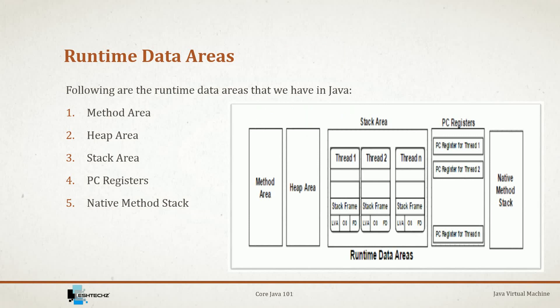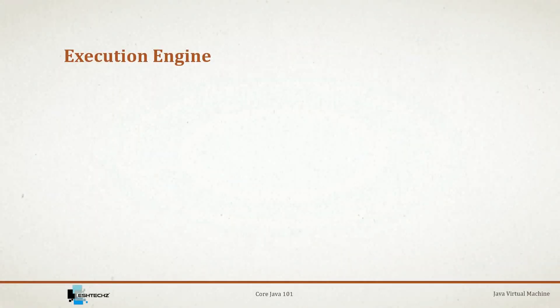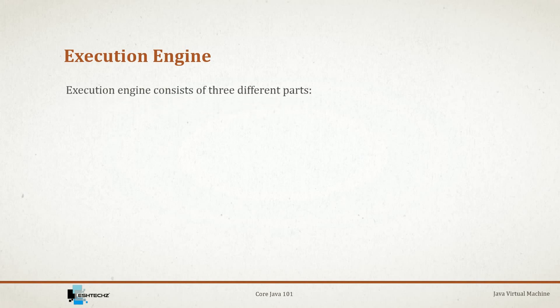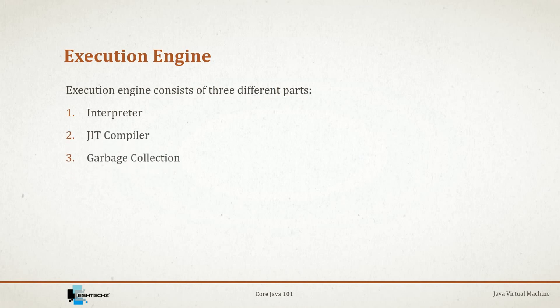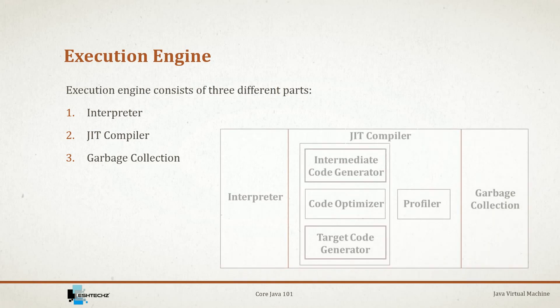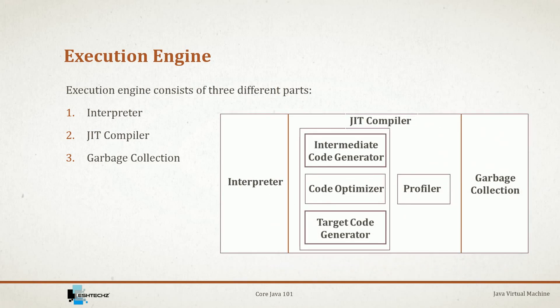The next section is the execution engine. The execution engine executes the bytecode assigned to it by reading and executing it line by line. It has three parts: the first is the interpreter, the second is the JIT compiler, and the last is garbage collection. This is how the execution engine looks in JVM architecture.